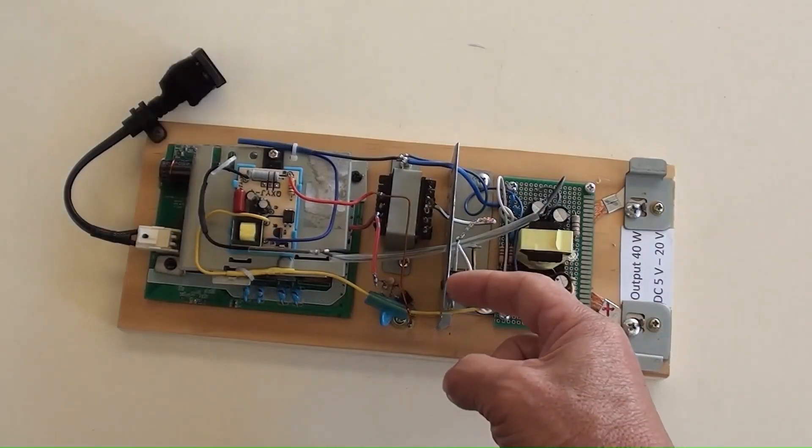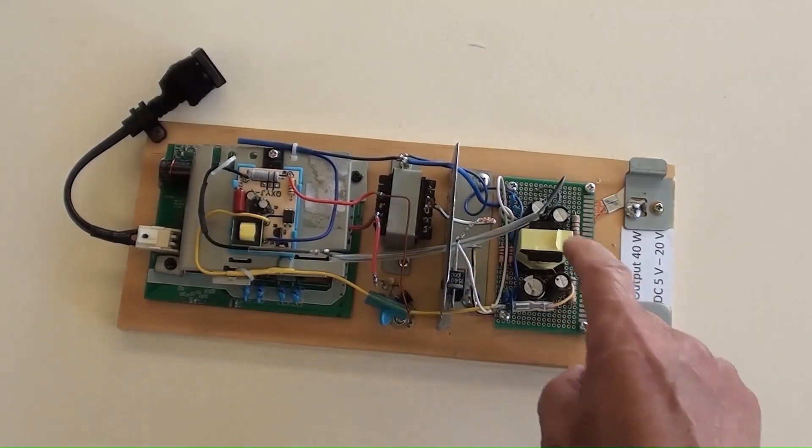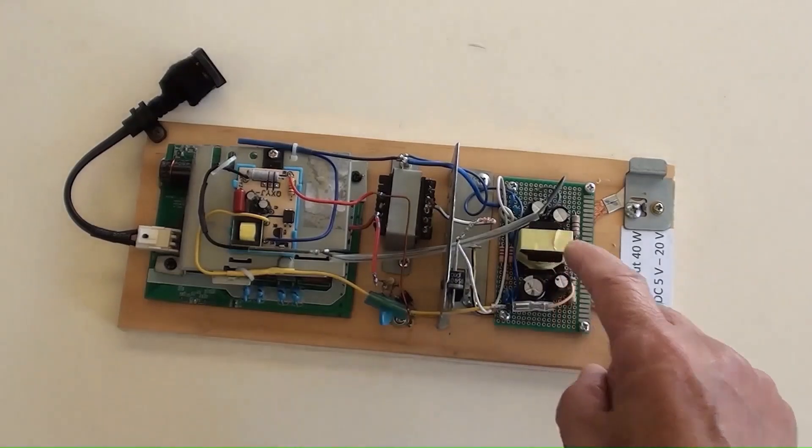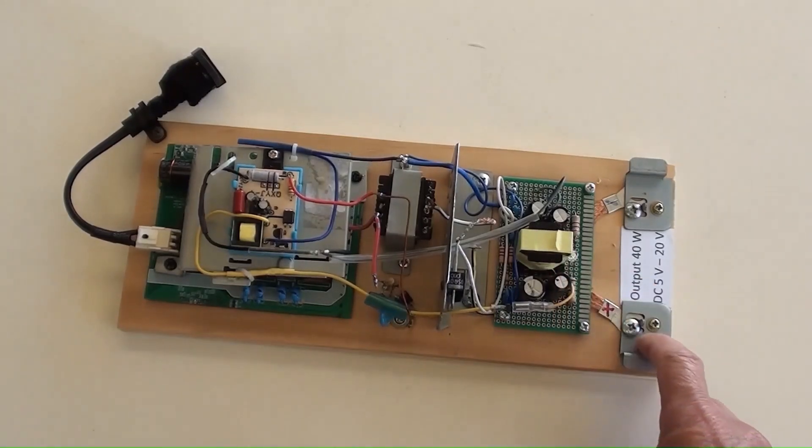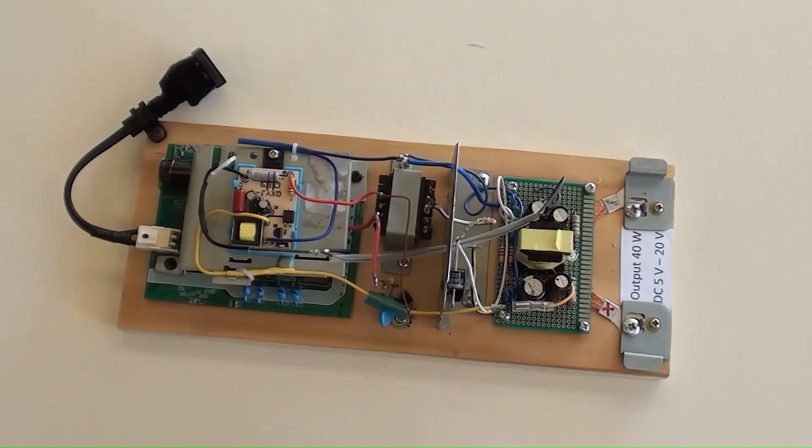The combined Schottky diode with its heat sink is secured here. The DIY secondary filter components are there. Those are the brackets for the output DC positive and negative.